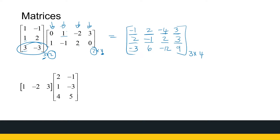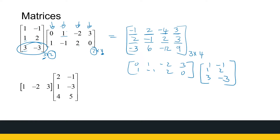That's the product of the two matrices. Now, would it have been possible to multiply the matrices in the other direction — is matrix multiplication commutative, is A times B the same as B times A? Looking at the sizes: two by four times three by two — that product does not exist, it's not defined. So in general for matrices, A times B is not necessarily equal to B times A, which is a property that real numbers have but matrices do not.